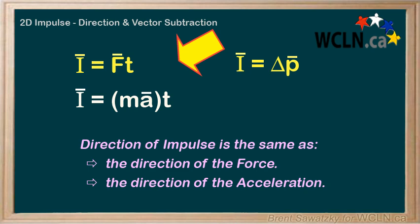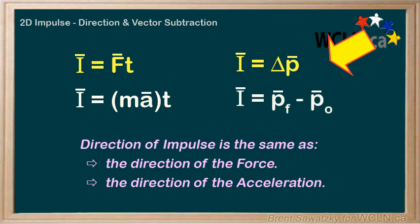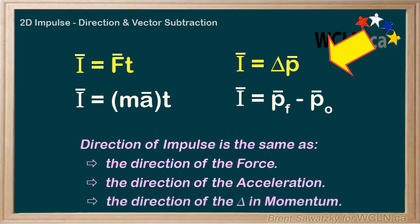Now, these are excellent hints for checking our results in impulse-related problems. Consider the involved vectors and determine the direction of the impulse. Now, let's switch over to definition number two. The vectors here are clearly the momentums. Knowing that delta p can be written as pf minus p0, we know that the impulse is in the direction of this difference in momentum.